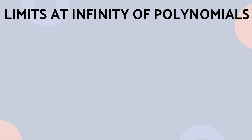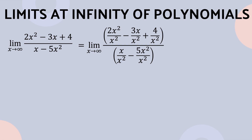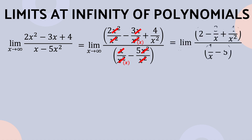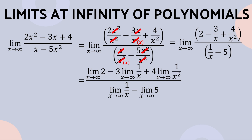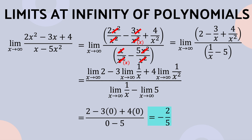Let us have another example. Let's find the limit of 2x squared minus 3x plus 4 all over x minus 5x squared as x approaches positive infinity. We divide each term in the numerator and denominator by the largest power of x in the denominator, which is x squared. Then, we simplify the fractions by canceling similar terms. After which, we rewrite the given by applying limit laws. Then, we evaluate the limit of each term and we apply the third theorem about limits at infinity of polynomials. Therefore, the limit of the function is negative 2 over 5.